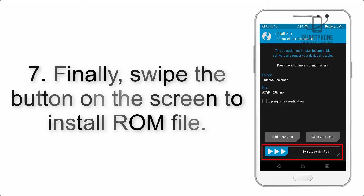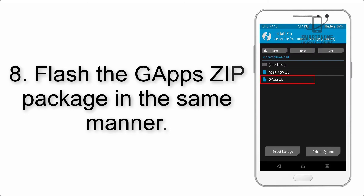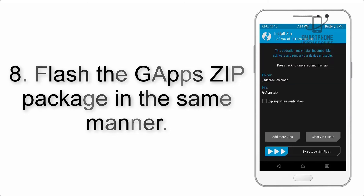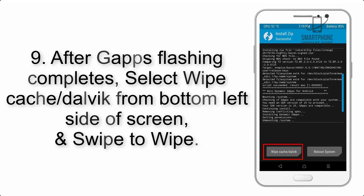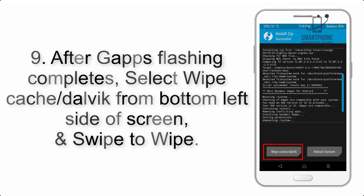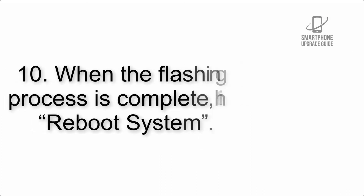Step 7: Swipe the button on the screen to install the ROM file. Step 8: Flash the Gapps zip package in the same manner. Step 9: After Gapps flashing completes, select Wipe Cache and Dalvik from the bottom left side of the screen and swipe to wipe.